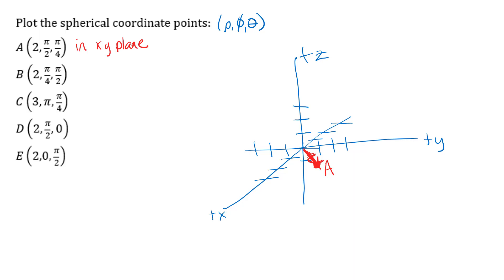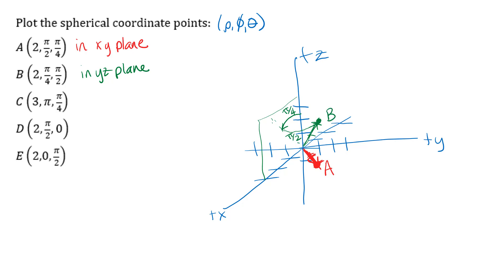For point B, the angles are swapped compared to point A, to show how phi and theta behave differently. Doing phi first: rotate down pi over 4 from the positive Z axis — that puts us on a cone. Then theta equals pi over 2 rotates us to the YZ plane. Coming out rho equals 2 units from the origin, point B ends up in the YZ plane.